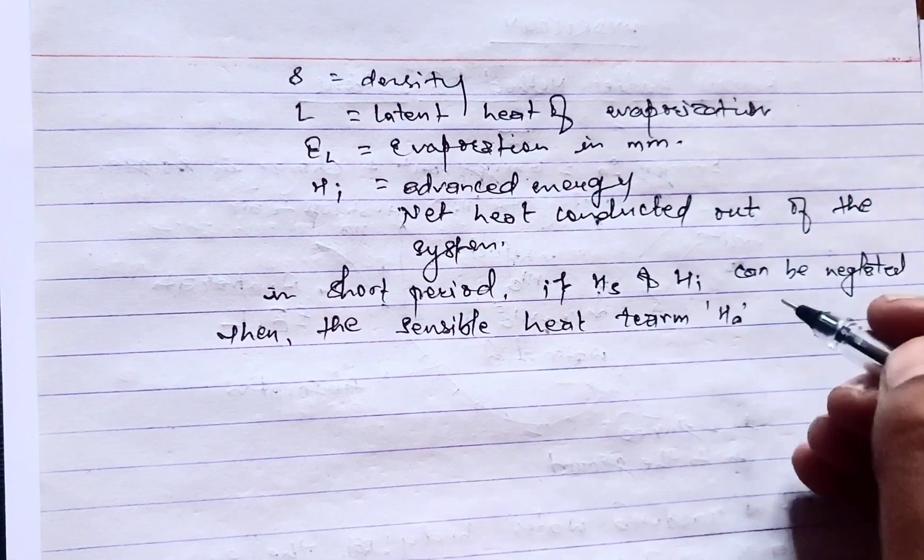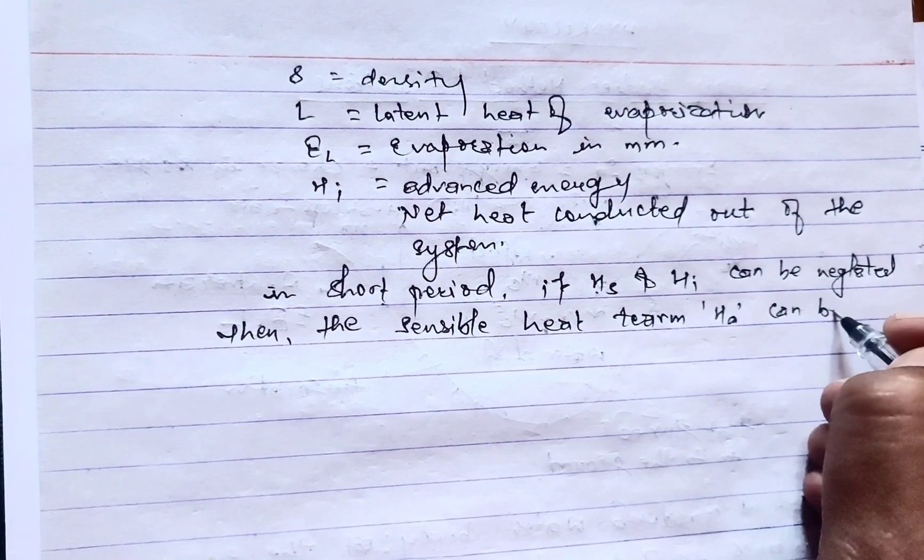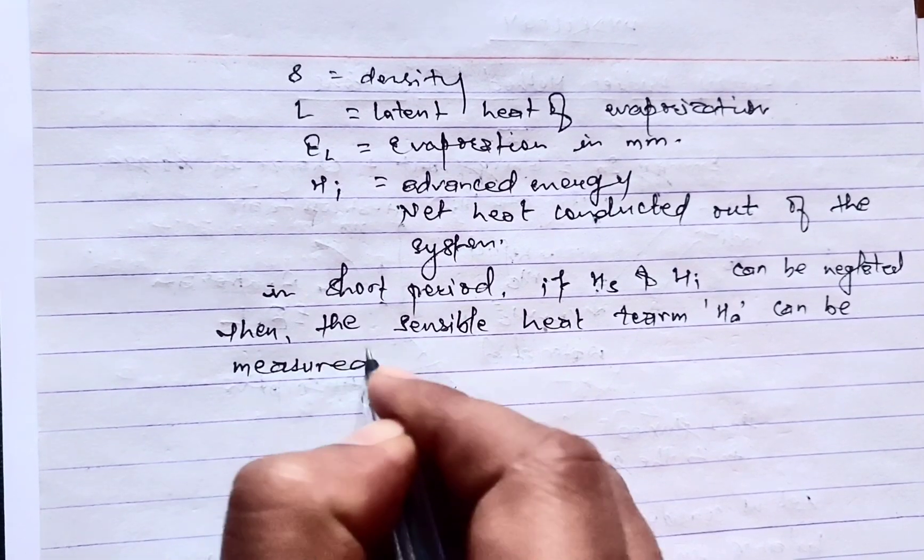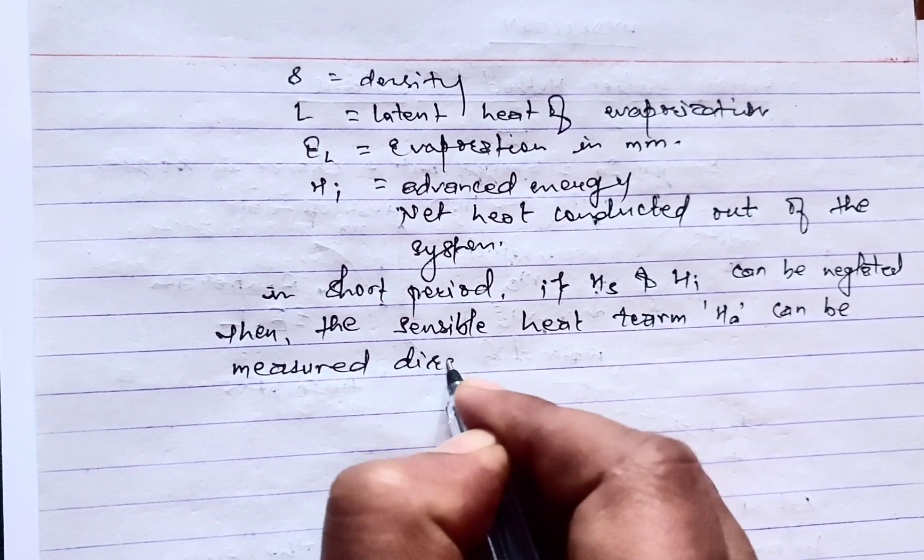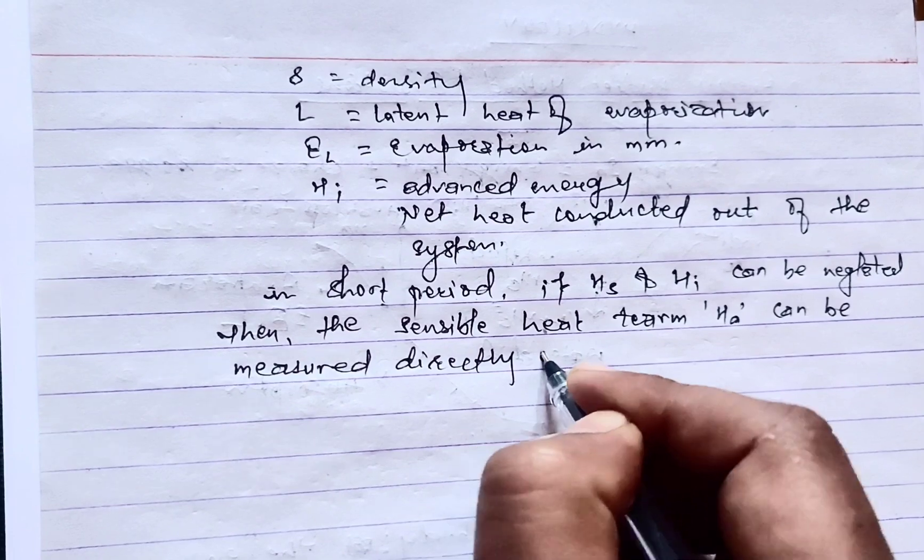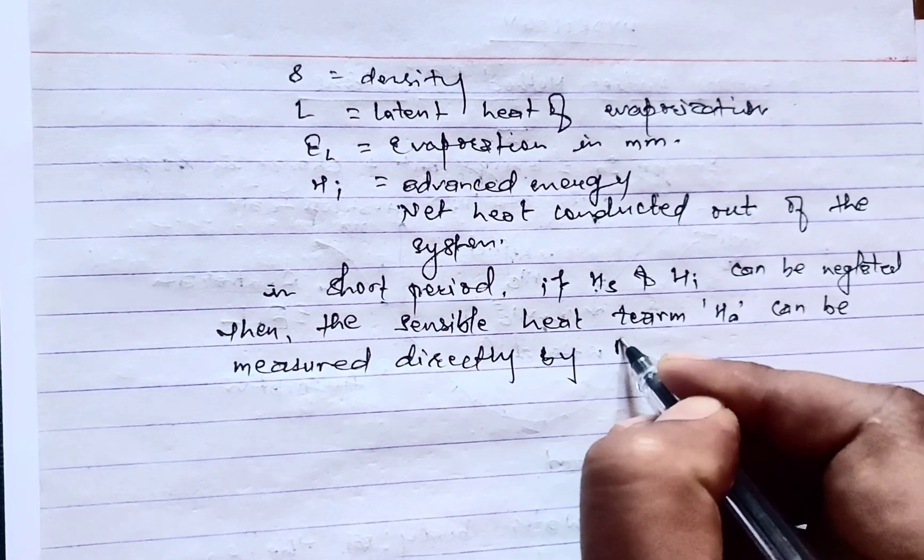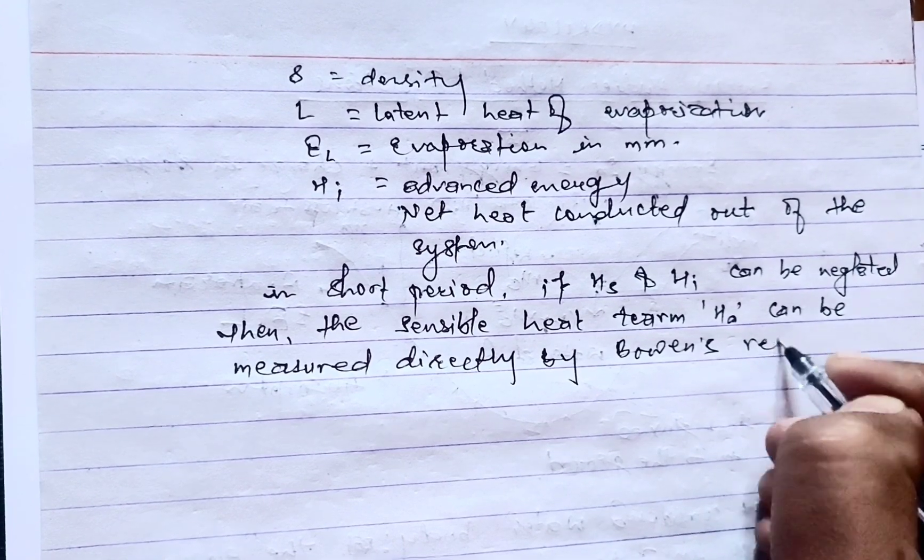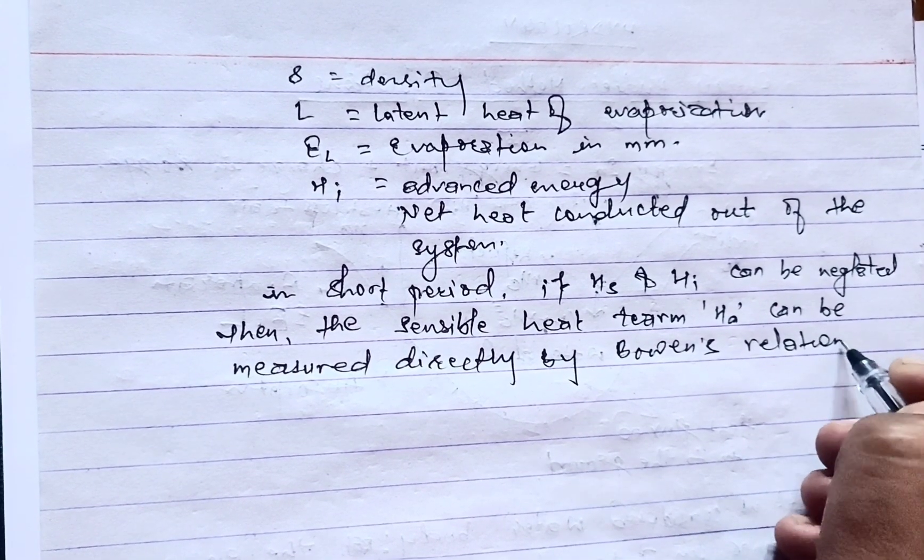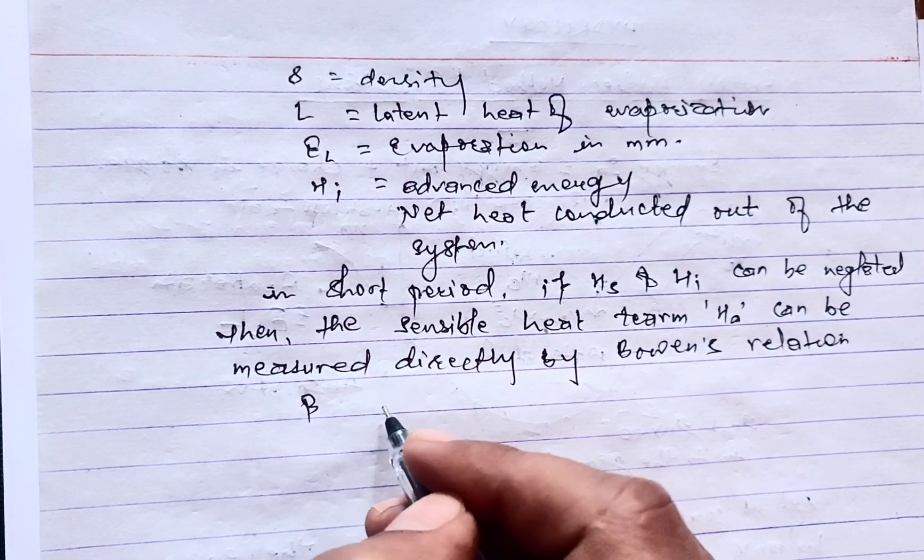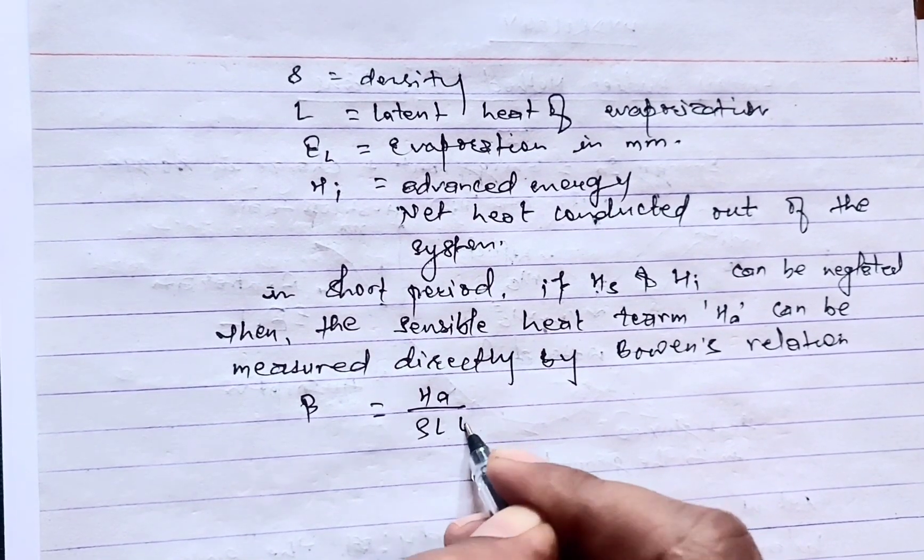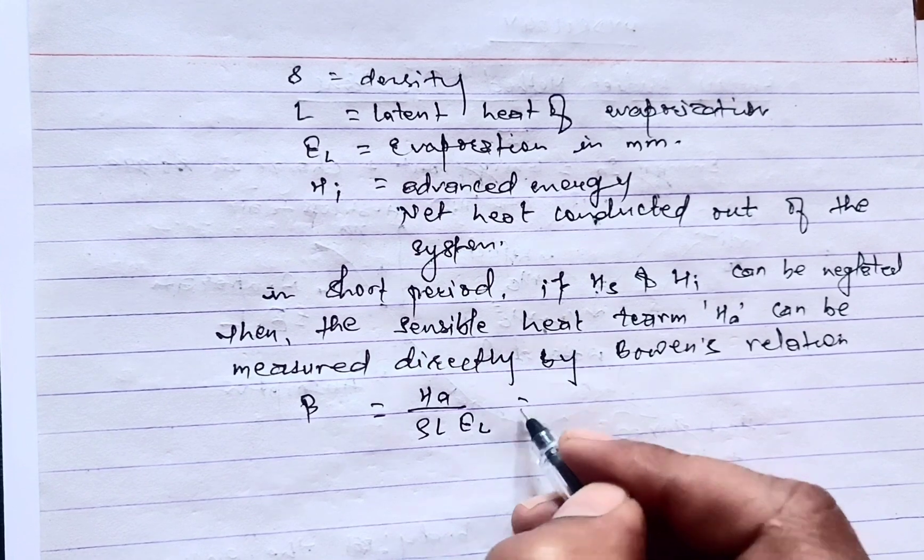Ha can be measured directly by Bowen's relation: β = Ha/(ρL·EL) = 6.1 × 10^-4 × Pa × (Tw - Ta)/(ew - ea).